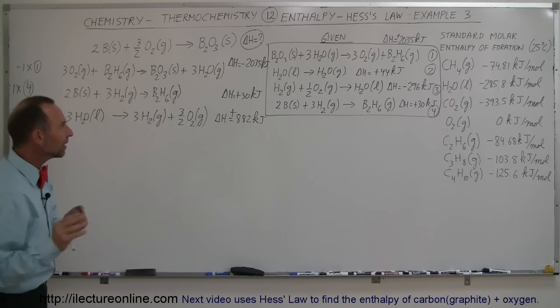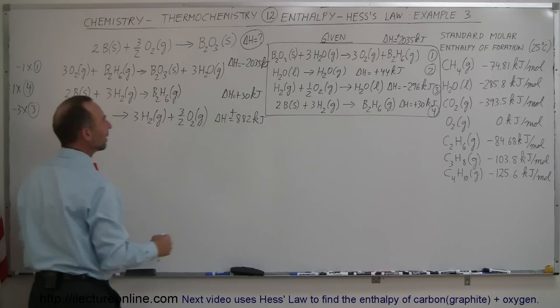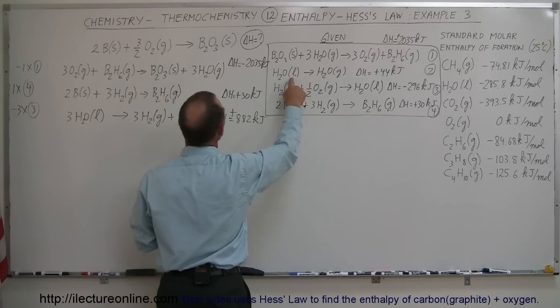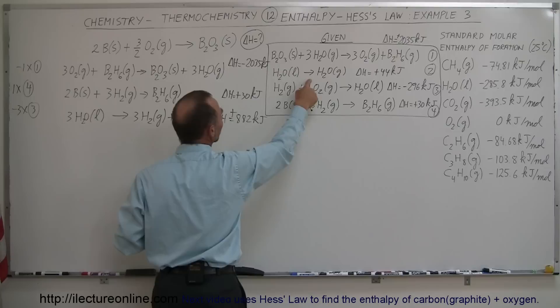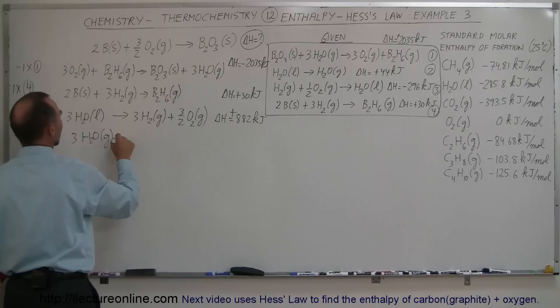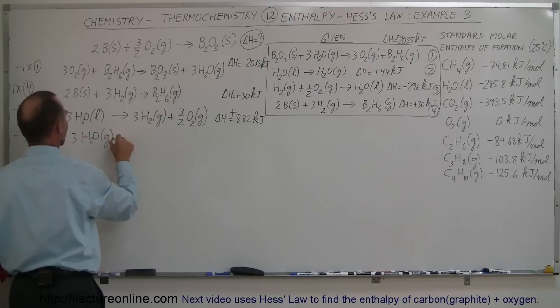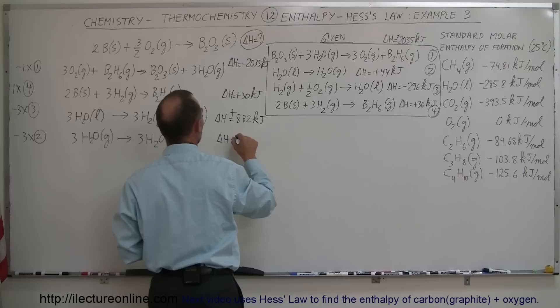Now I have hydrogen gas on one side and water liquid on another, so I need one more equation to handle that. I want to cancel three moles of hydrogen gas and three moles of liquid water, so I take equation two, turn it around, and multiply times three — that's minus three times equation number two. That gives three moles of water vapor reacting to form three moles of water in the liquid state, with a delta H of minus 132 kilojoules. When gas turns into liquid it gives off heat — an exothermic process.